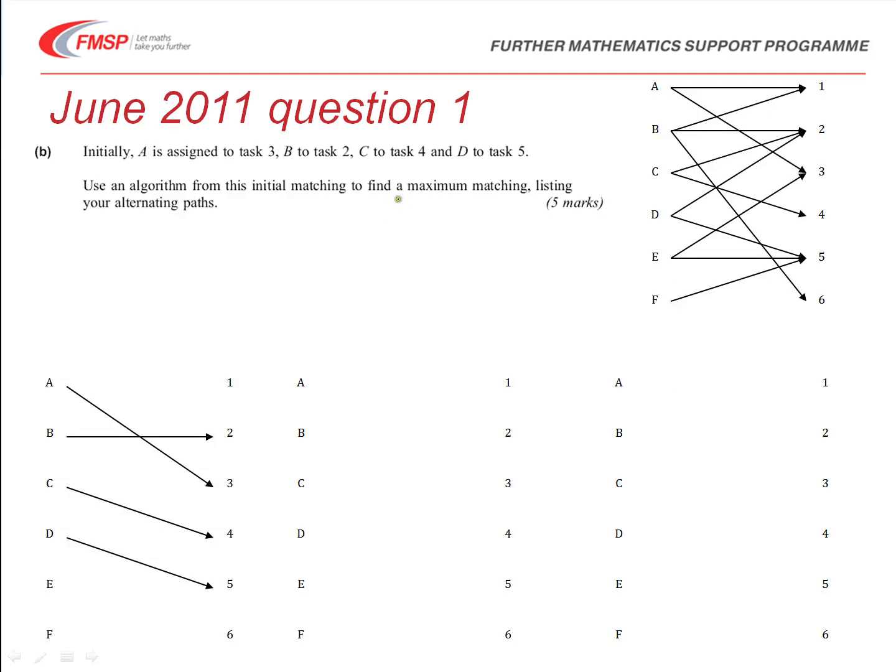Now initially then, in part B, we are asked to consider an initial matching in which A is given task 3, B is given task 2, C is given 4, and D is given task 5. And we've got to use an appropriate algorithm from this initial matching to find a maximum matching listing the allocation when completed. So, the idea of the algorithm is to start at a point on the right hand side. So, for example, 1 has not been allocated. And then to look at the possible matchings from the table or from the bipartite graph that we drew in the first part.